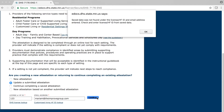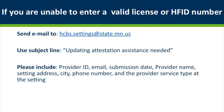If your license or HFID number is not accepted, you will receive an error notification. If you are not able to proceed to the next page, recheck that your number and email match the confirmation email received after submission. If you are still unable to enter a valid number and email combination, please send us an email. Do not start a new attestation. Send an email to hcbs.settings@state.mn.us with the subject line: Updating Attestation Assistance Needed.